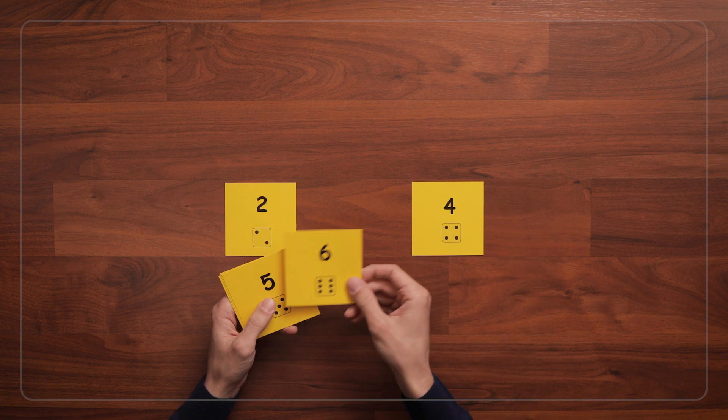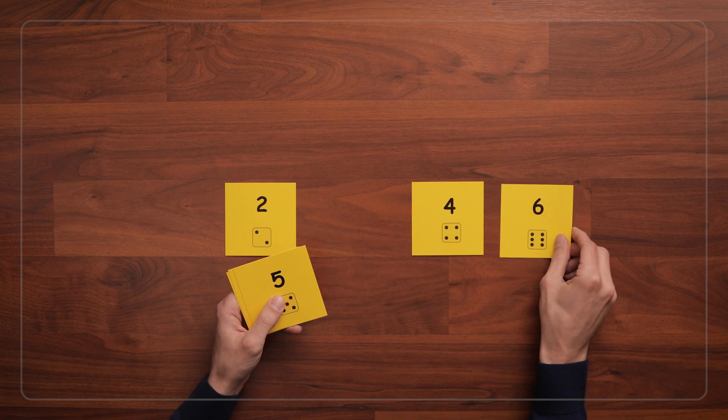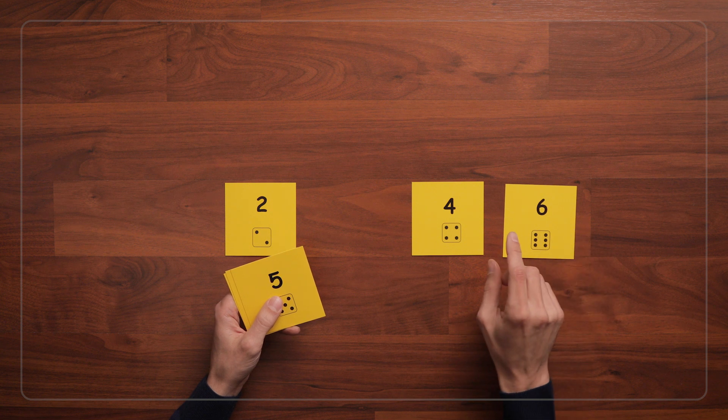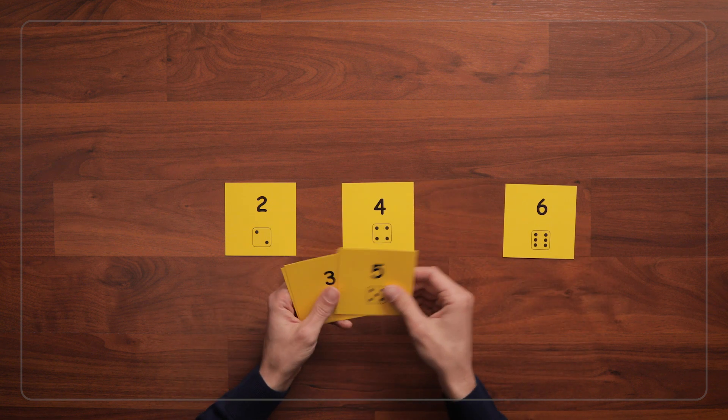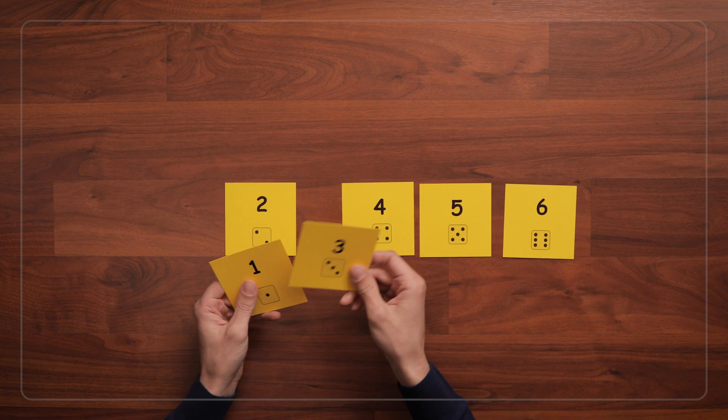Do they know what order the numbers go in? Do they know when to leave space for the 5 or do they put the 6 right next to the 4? All great things to notice as you're paying attention to children's thinking.